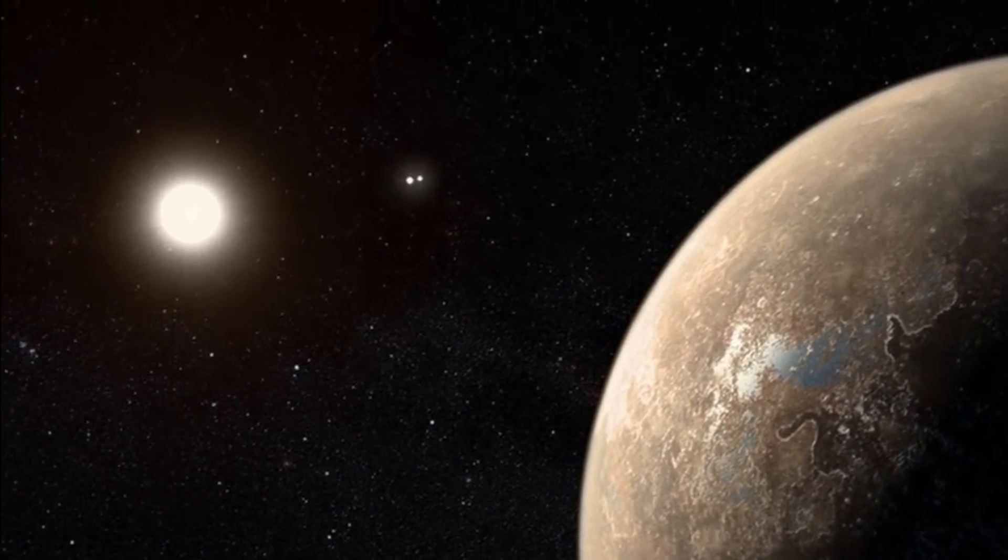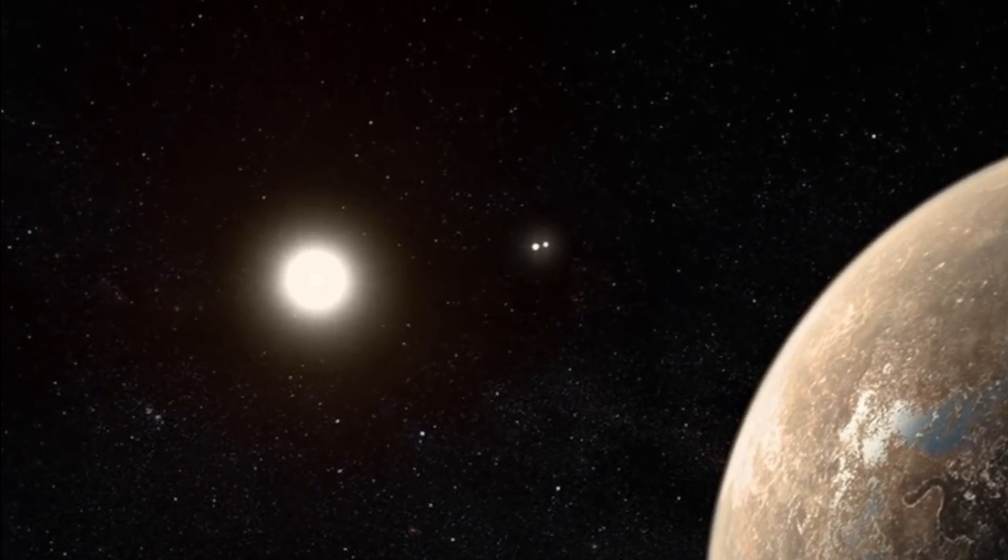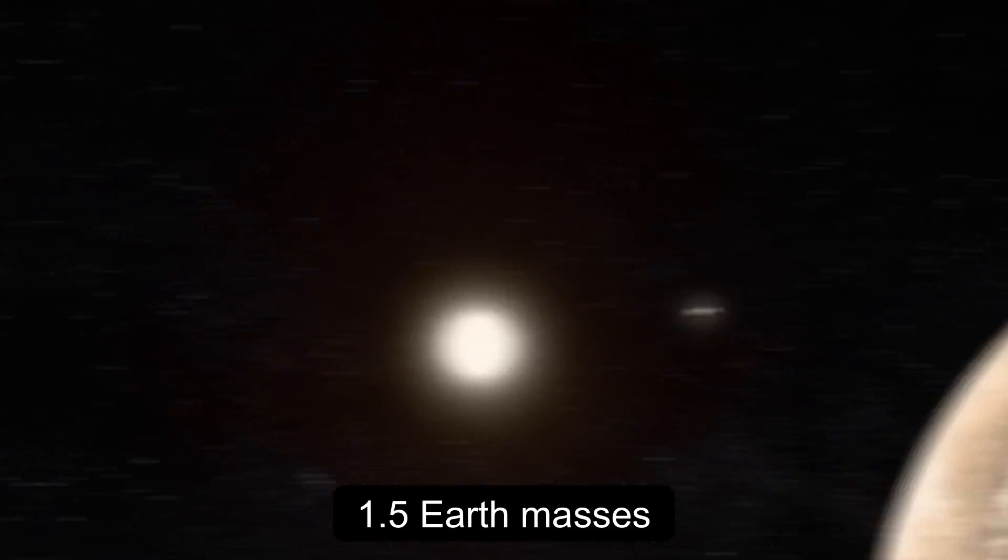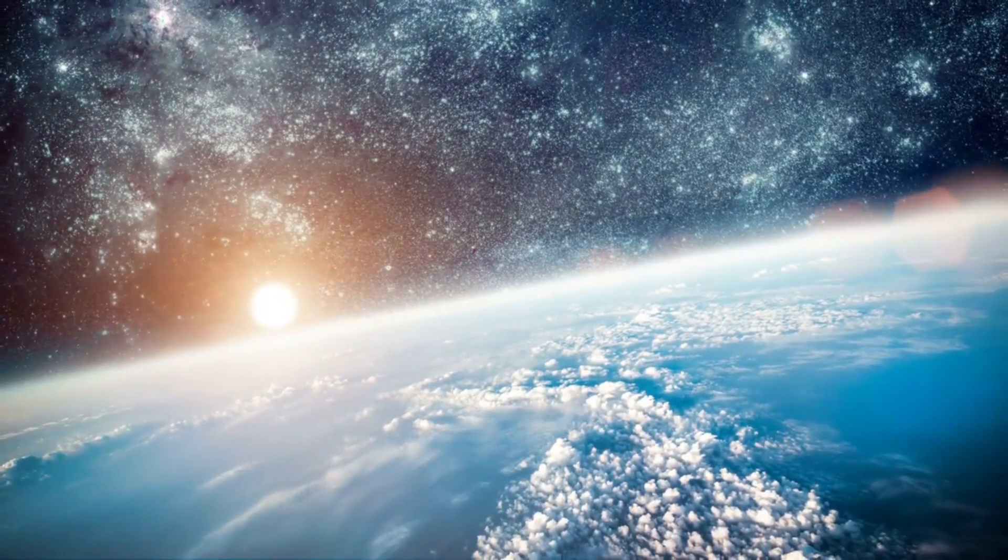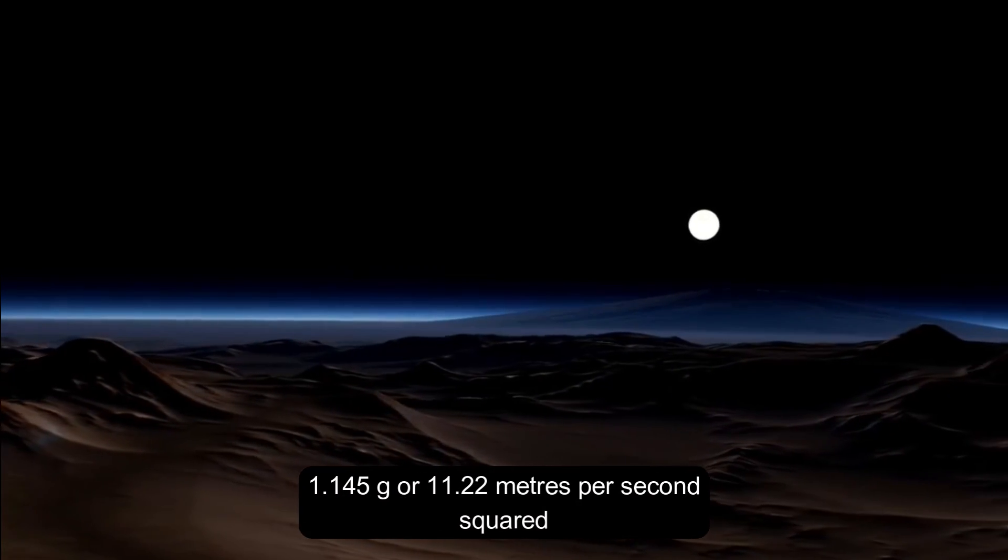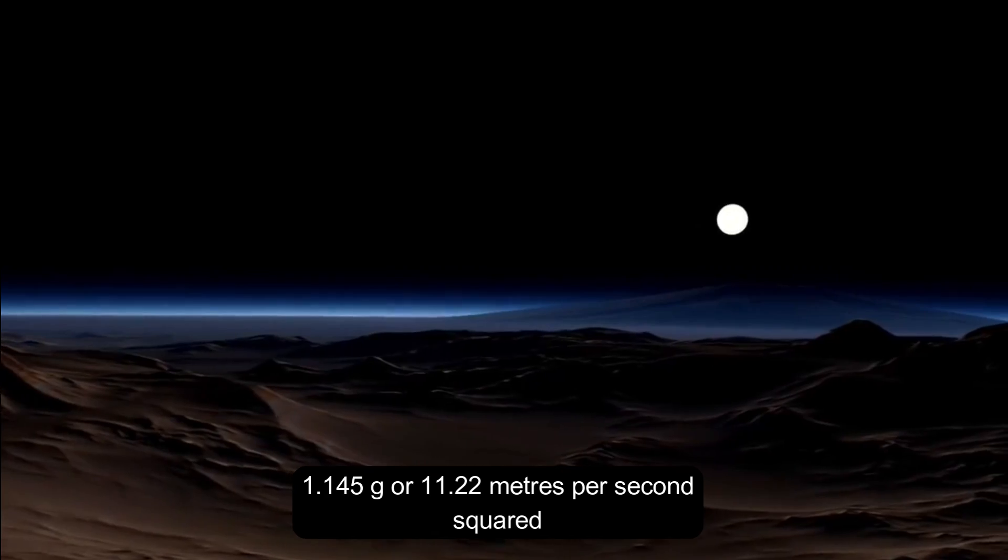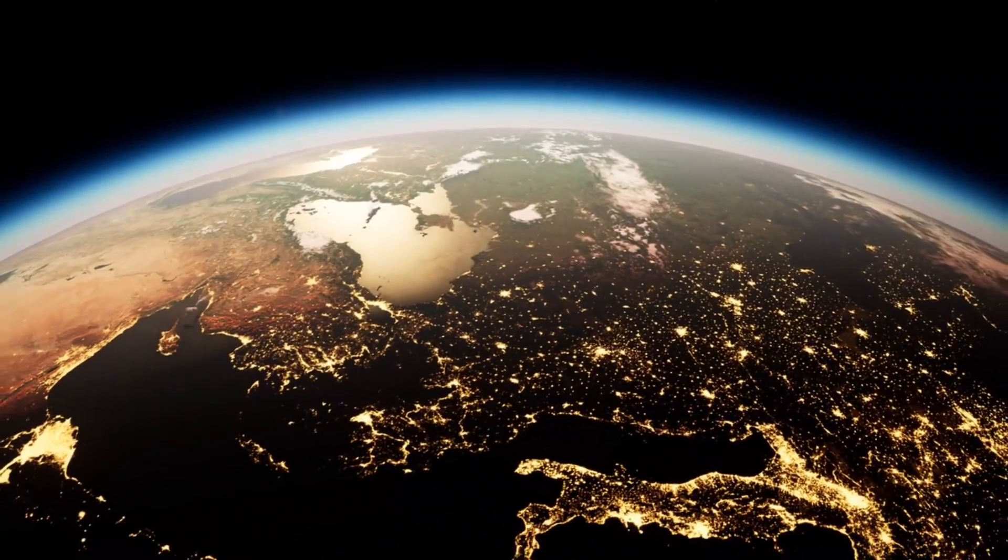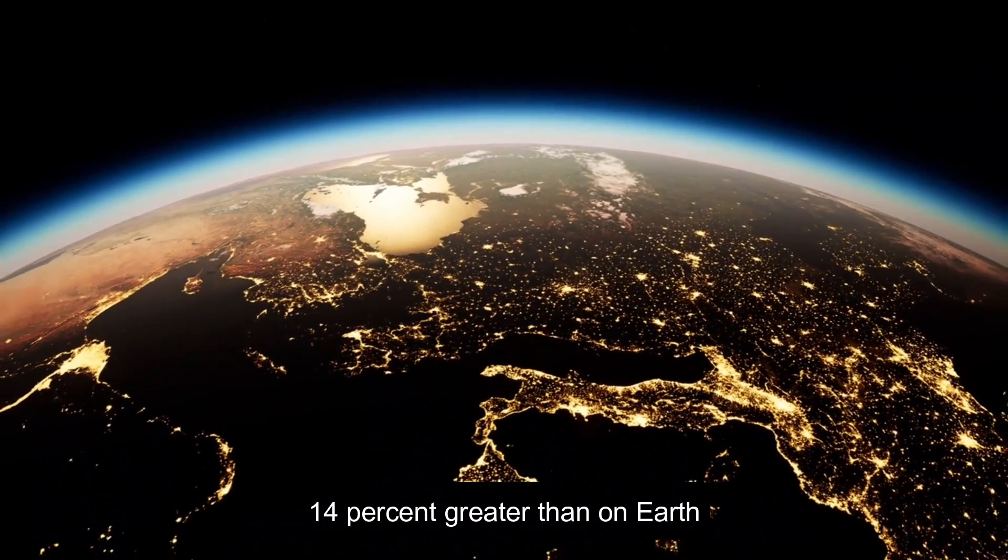Proxima b, like Earth, yields gravity. If Proxima b is spherical with a mass of 1.5 Earth masses and the same mass density as Earth, its surface gravity would be around 1.145 g, or 11.22 meters per second squared, which is about 14% greater than on Earth.